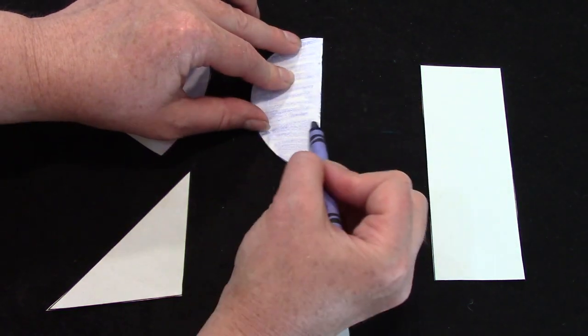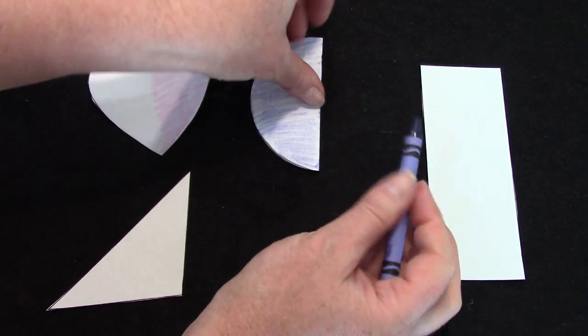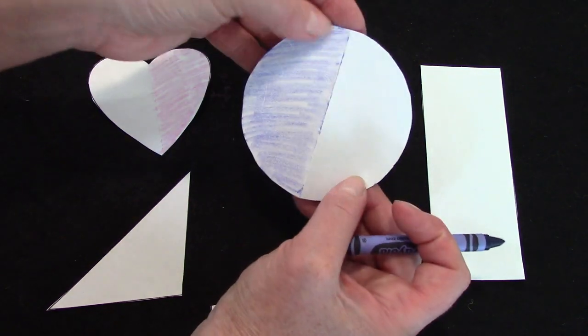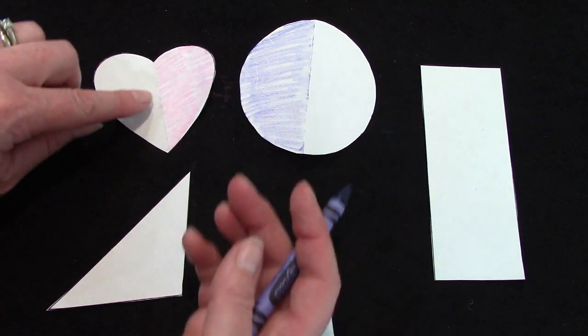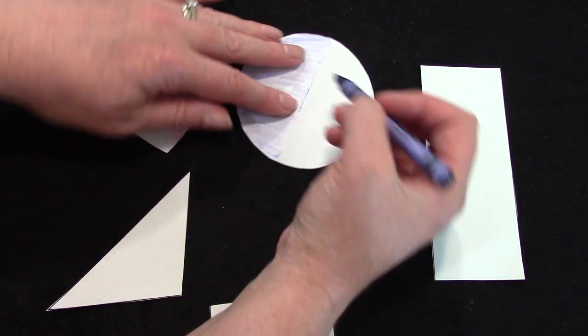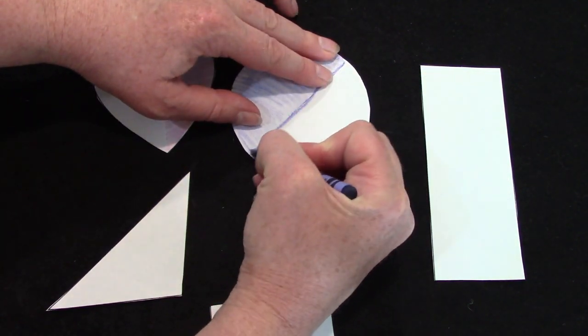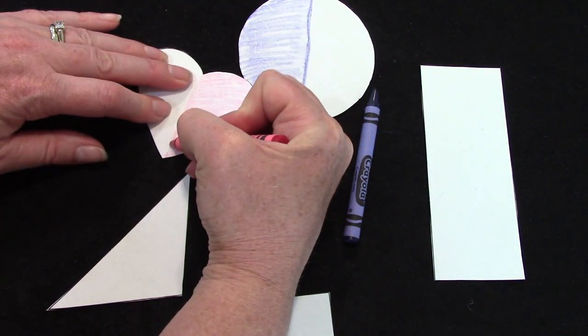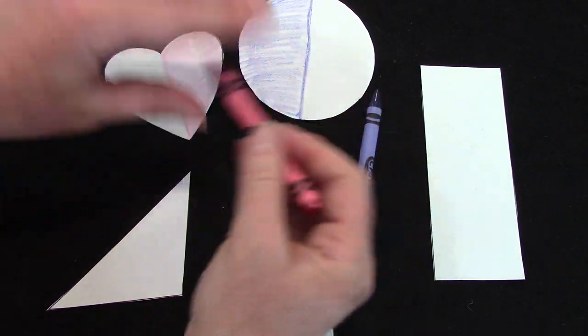When we fold it in half, it helps us to color kind of perfectly. So I have colored one half—one half of my circle, one half of my heart.